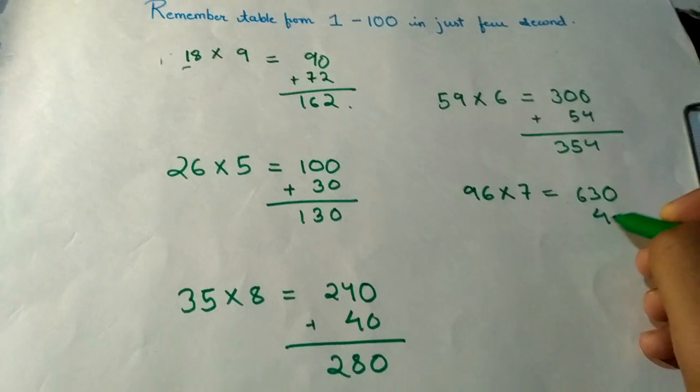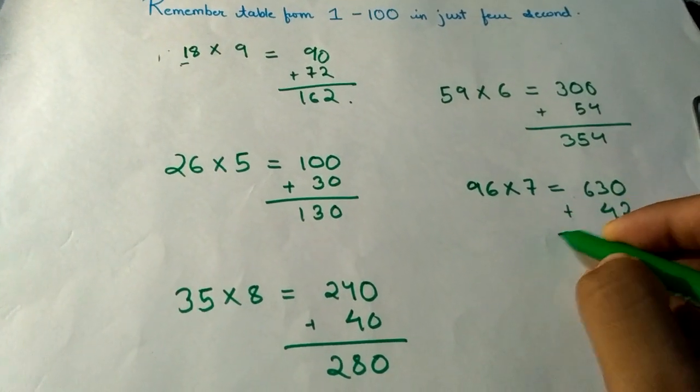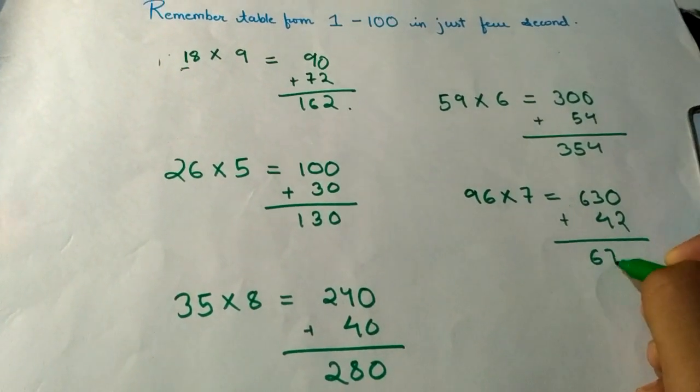Now 6 × 7 = 42, so I will add 630 + 42 = 672.